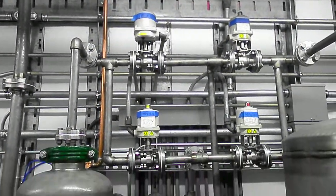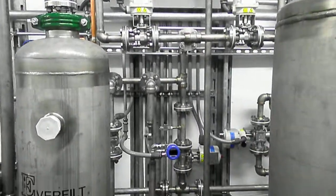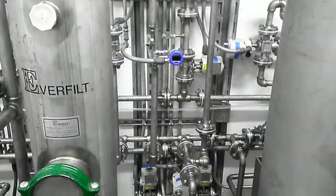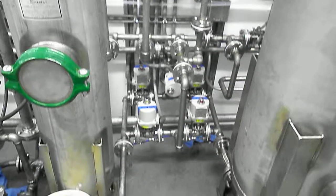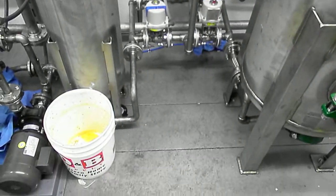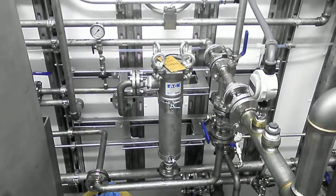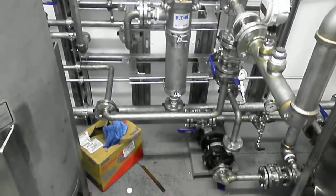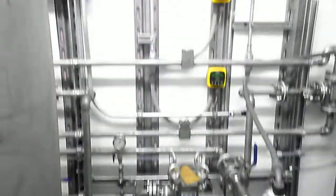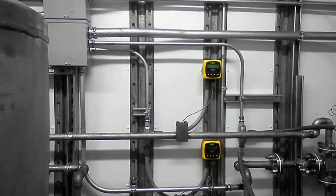Valving and piping. Then we move over to the bag filter. Those are your flow meters.